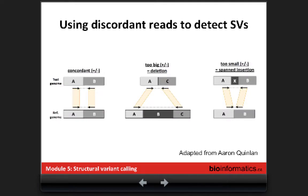You then look at whether these discordant reads show clustering. You could have discordant reads by chance — in that case you will find discordant pairs spread everywhere — or discordant by biology, where you see many reads accumulating at one location. For example with a deletion, you expect your insert size to be larger when mapped to the reference, because there's a piece in the reference that is missing from your test genome.